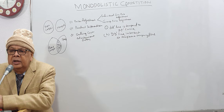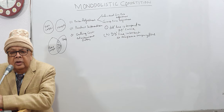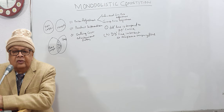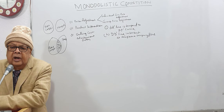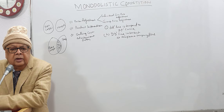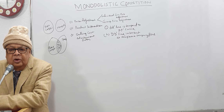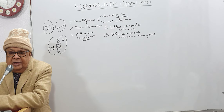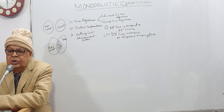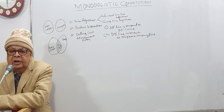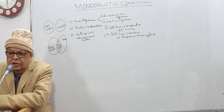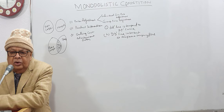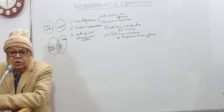We know that the individual firm's aim is to maximize profit. So an individual firm under monopolistic competition can earn super normal profit if demand is high, normal profit if demand is moderate, or even a loss when demand suddenly falls very low. Under monopolistic competition in the individual case, there is super normal profit, normal profit, or loss. But here we are concentrating on group equilibrium.